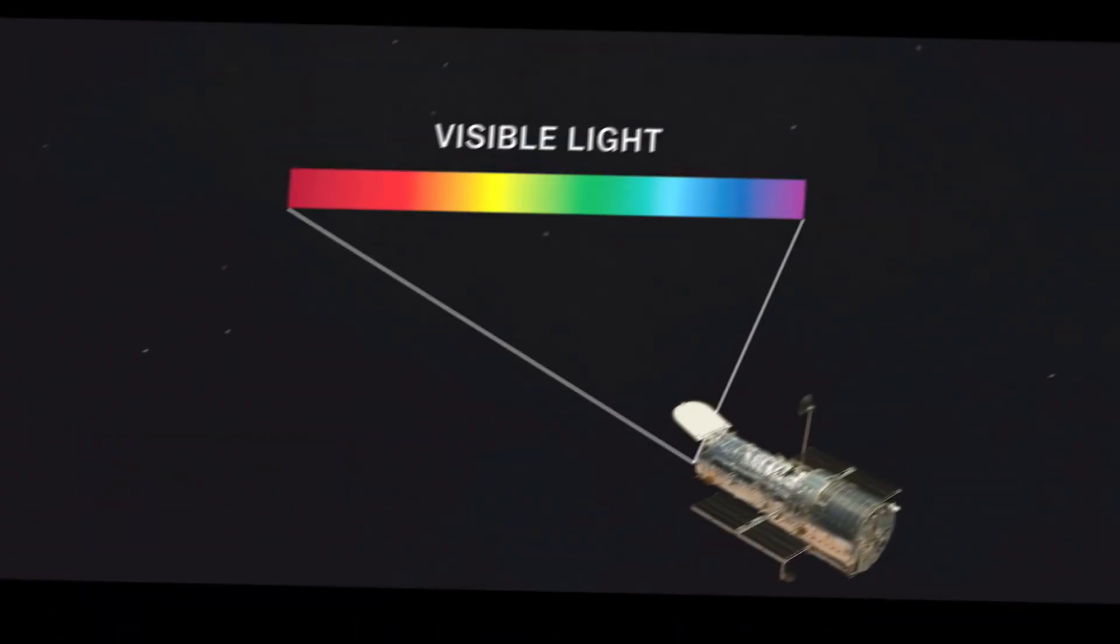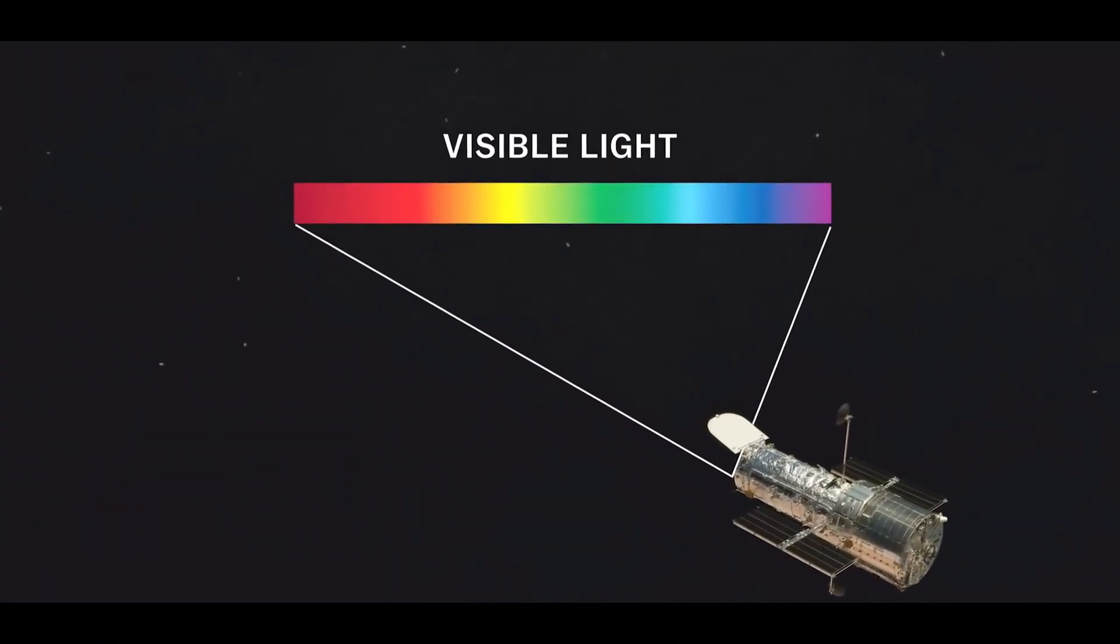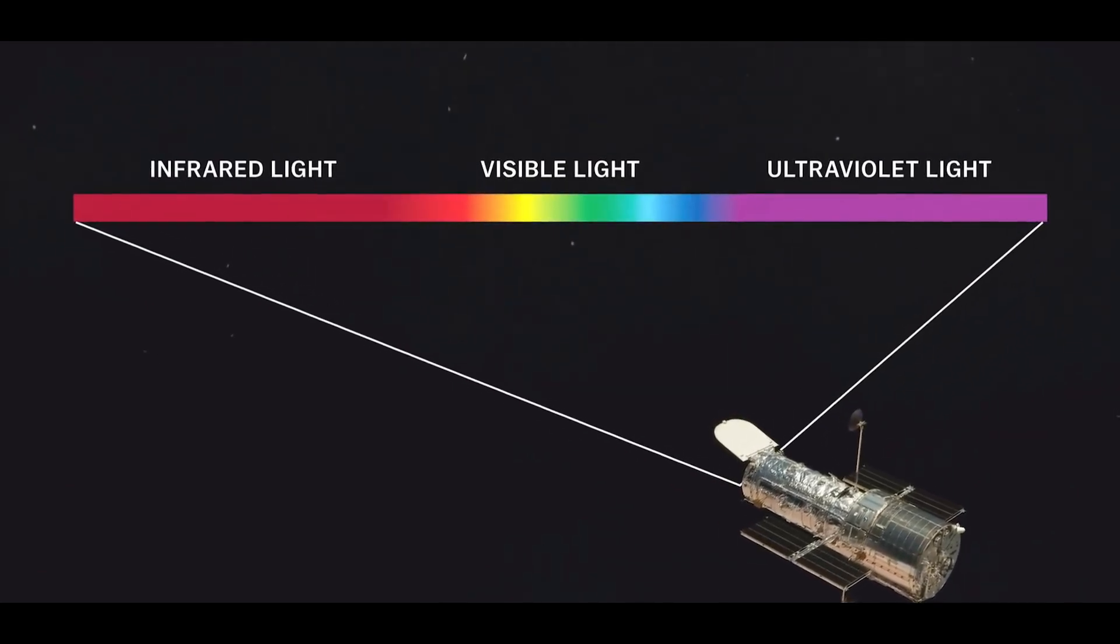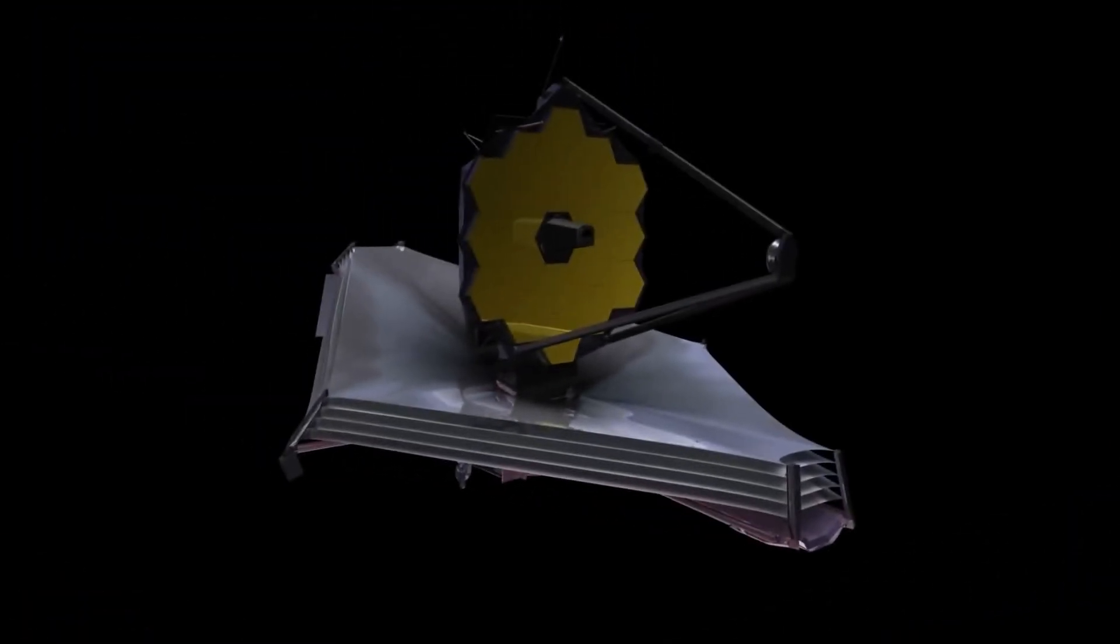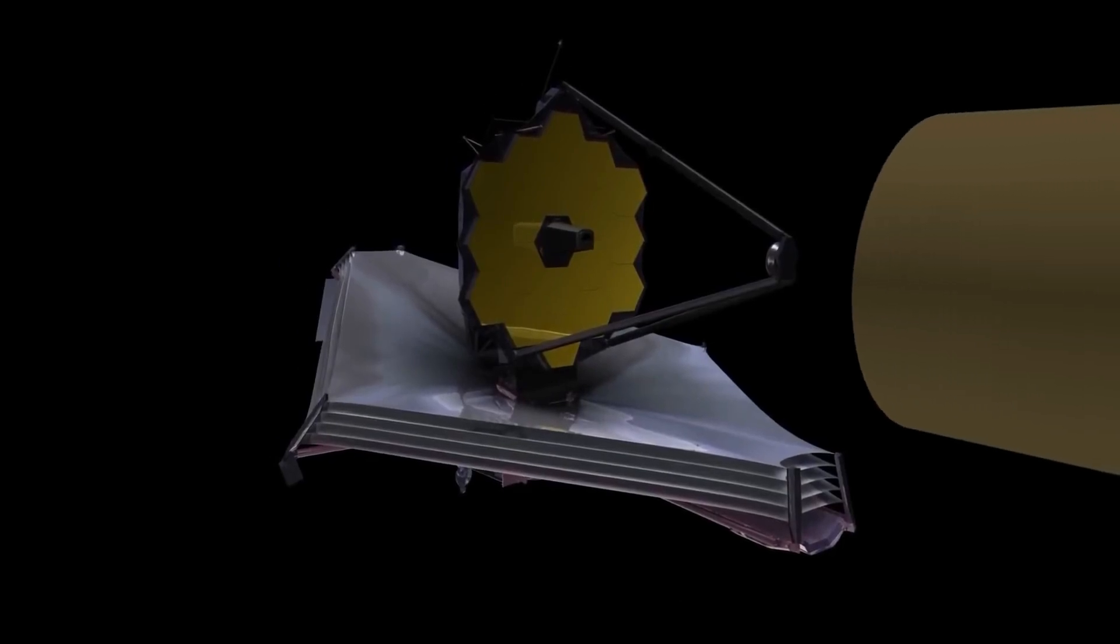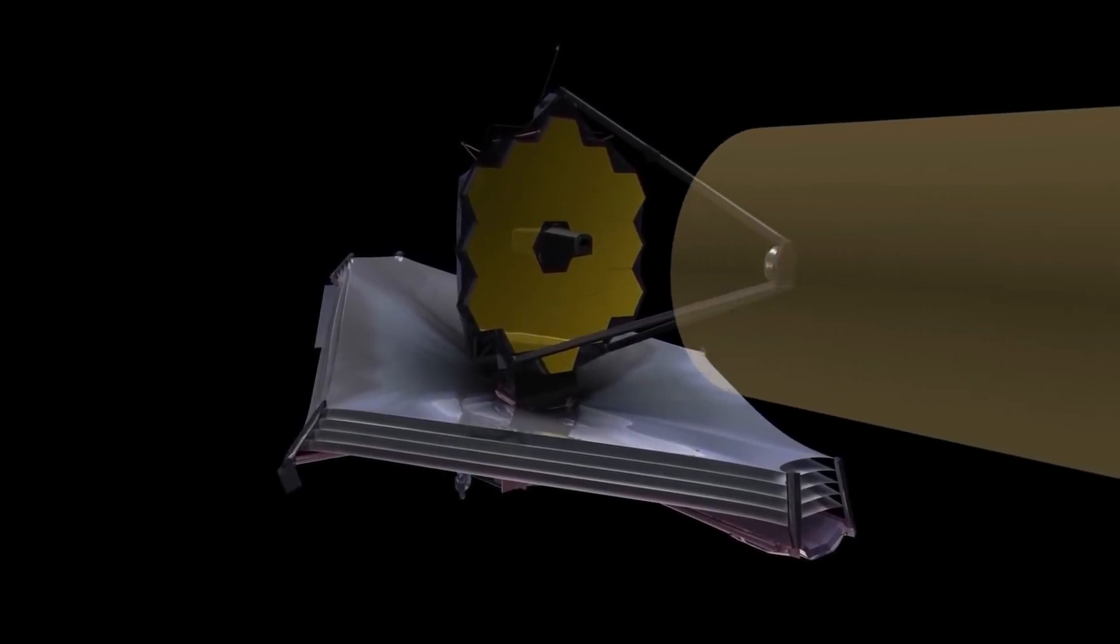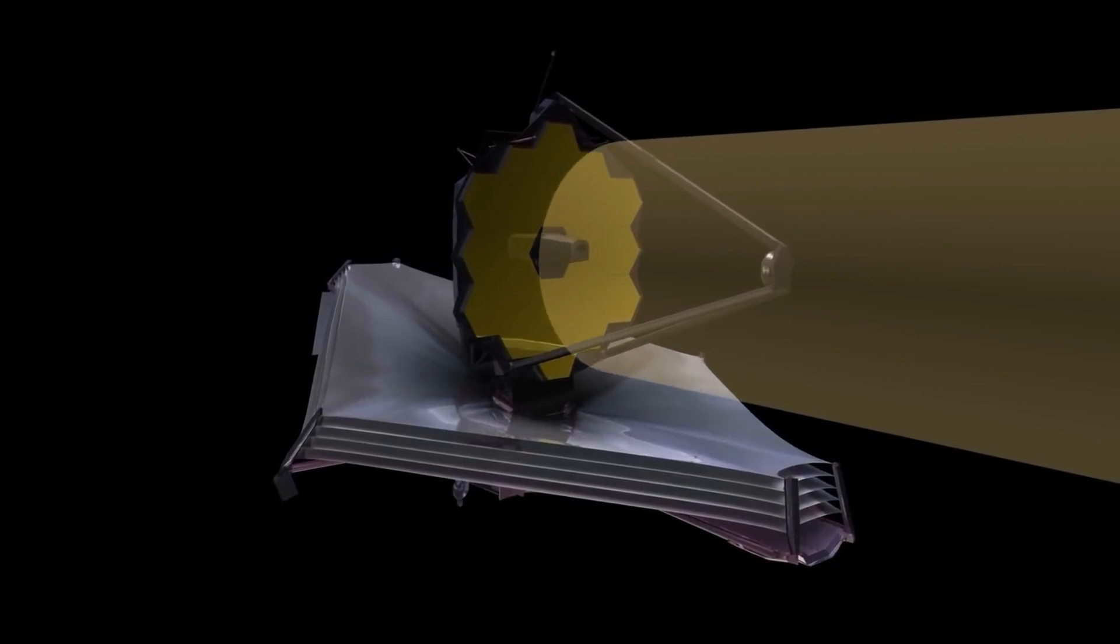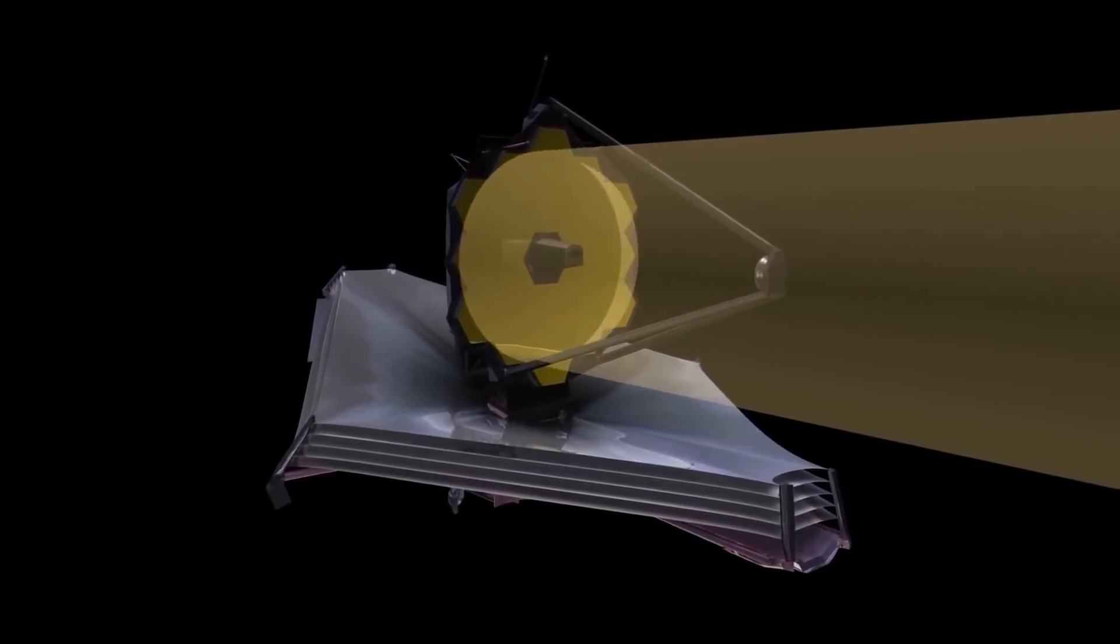This will be different from the Hubble Space Telescope, which mostly uses visible light, ultraviolet radiation, and near-infrared radiation to make its observations. But even though it is not as powerful as the James Webb Telescope, it has made its fair share of amazing discoveries. So what is the main purpose of the James Webb Telescope?